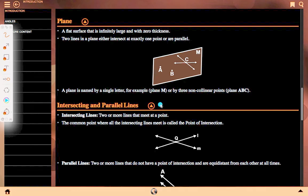Intersecting lines: Two or more lines that meet at a point. The common point where all the intersecting lines meet is called the point of intersection. Here line one and line two both intersect at Q.